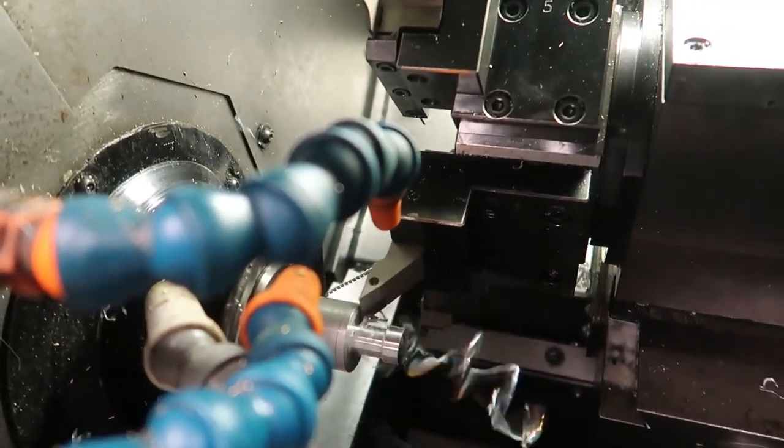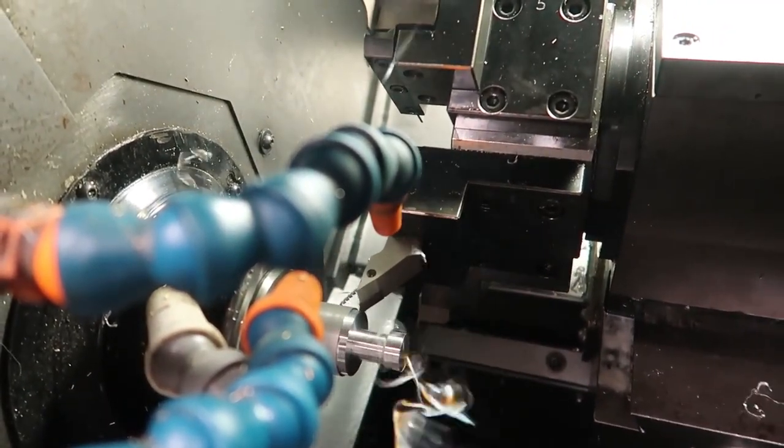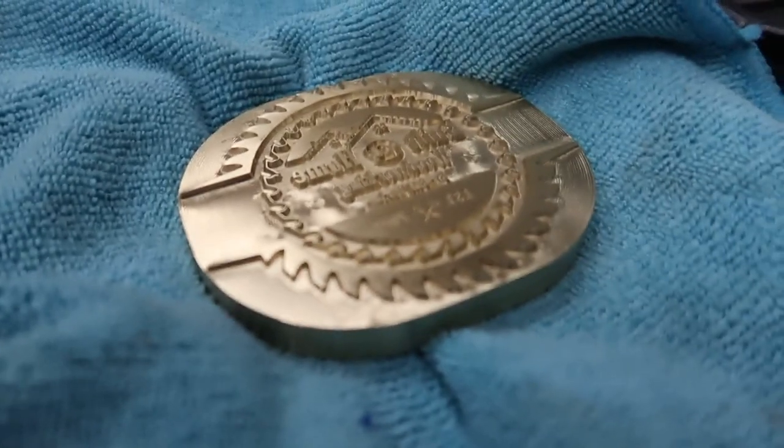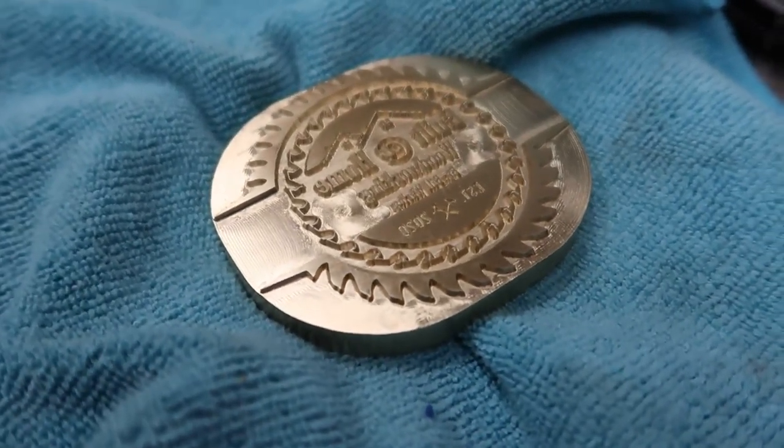Then while the Tormach is running, back to the lathe to make these threaded shaft pieces. This is for an upcoming project that I'll definitely be showing probably more in depth.